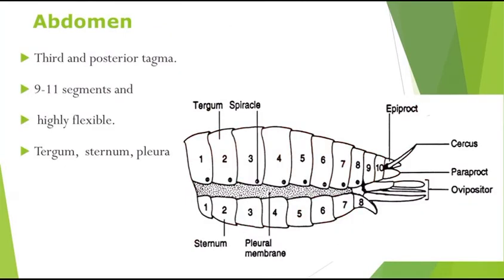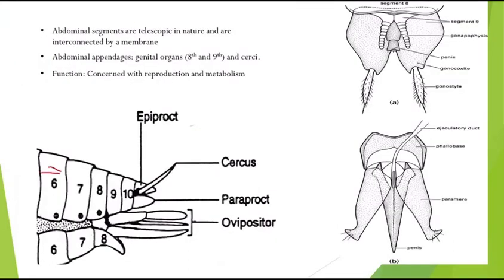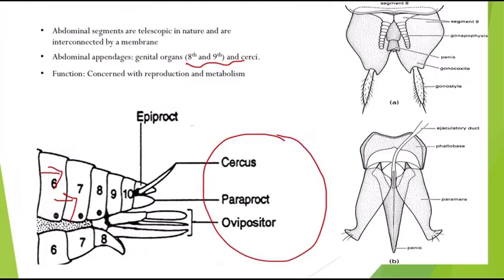The third tagmata is the abdomen, the posterior segment with 9 to 11 segments, which is highly flexible. It also has a tergum, sternum, and pleura similar to the thorax. The abdominal segments are telescopic in nature and highly flexible, interconnected by membranes. The abdomen has male and female genital organs on the 8th and 9th segments, and structures like the ovipositor in females, as well as cerci, paraproct, and epiproct. It is concerned with reproduction and, since the gut is housed inside, also with metabolism.